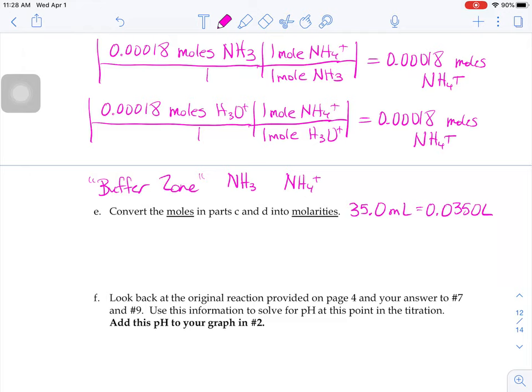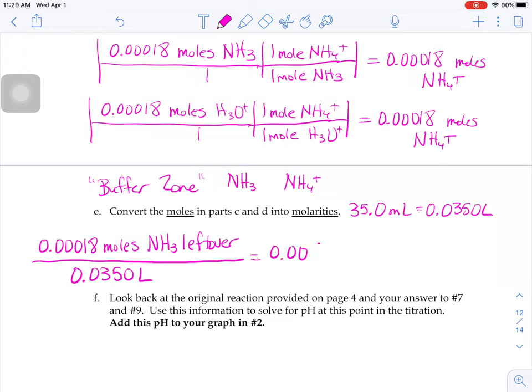So if we want moles and molarity, if we had 0.00018 moles worth of NH3 left over—0.00018 have reacted and we have 0.00018 moles left over in that flask—and the volume of that solution at that moment in time is 0.0350, that means that we have 0.00514 molar.